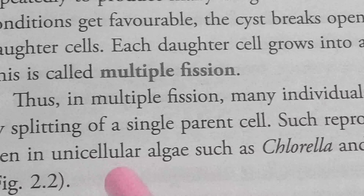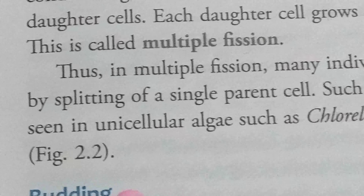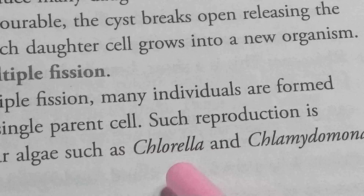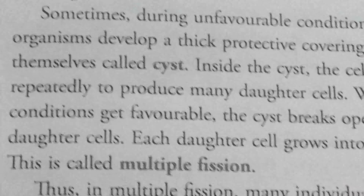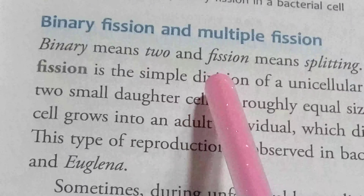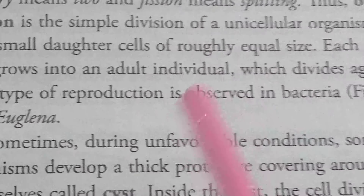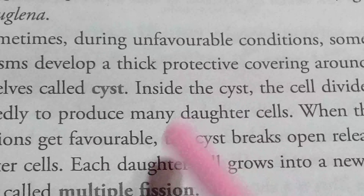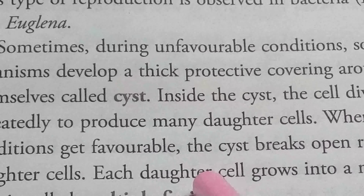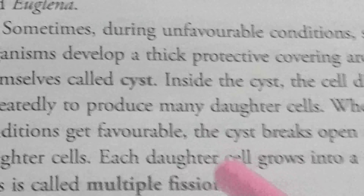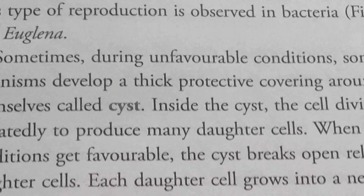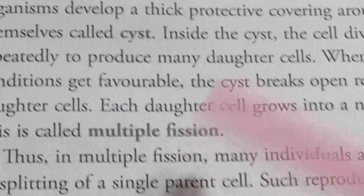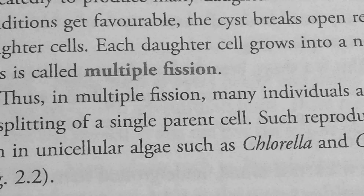Multiple fission is observed in unicellular algae such as Chlorella and Chlamydomonas. In summary: in binary fission, a single parent cell divides into two equal-size daughter cells with identical characters. In multiple fission, under unfavorable conditions, the organism develops a thick protective layer, divides many times inside the cyst to produce many daughter cells, and after favorable conditions return, the cyst breaks and the daughter cells grow into individual organisms.